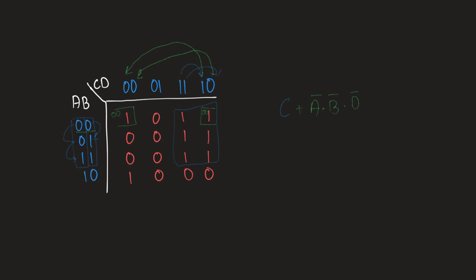We can write down our final equation as x = C + A-naught B-naught D-naught. By convention writing C first doesn't really matter. That's it — that's the whole concept of K-maps. Hope to see you next time.